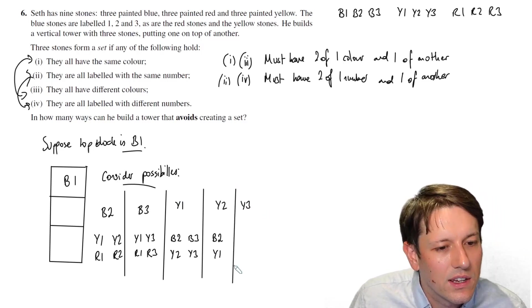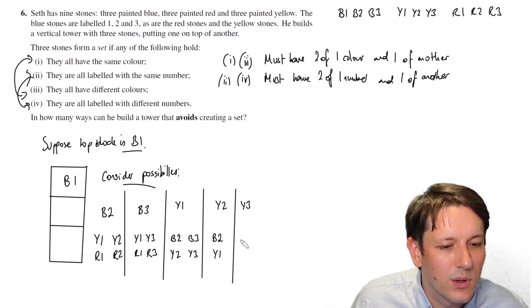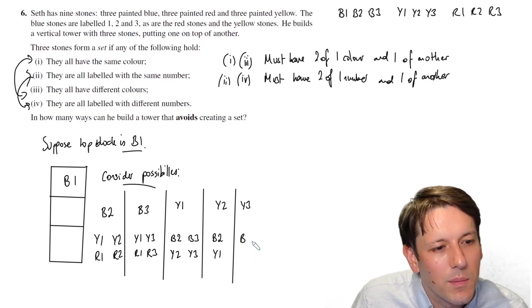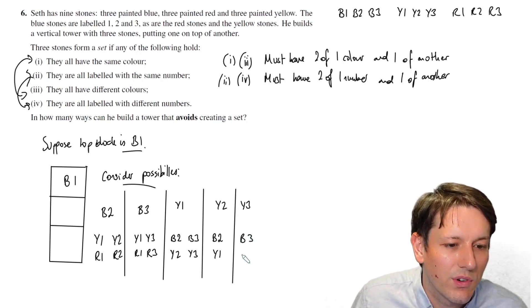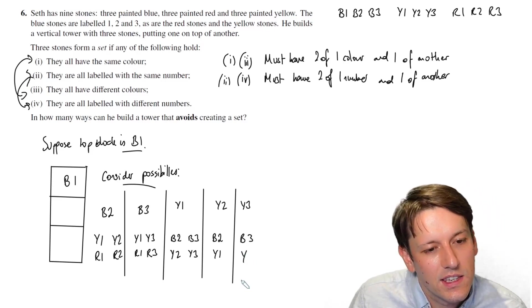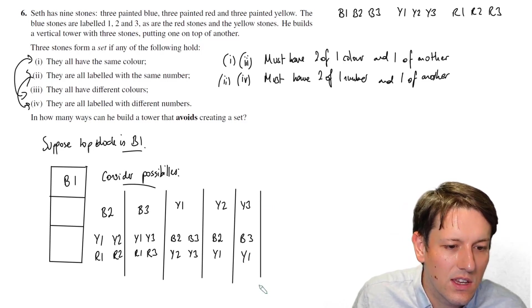With yellow three, similar here now. I've got to have another blue or yellow. I've used blue one already. Blue two wouldn't work because it would give me one, two, three, so I'll have that. Blue three is a possibility, and yellow one is the other possibility for the same reason here.